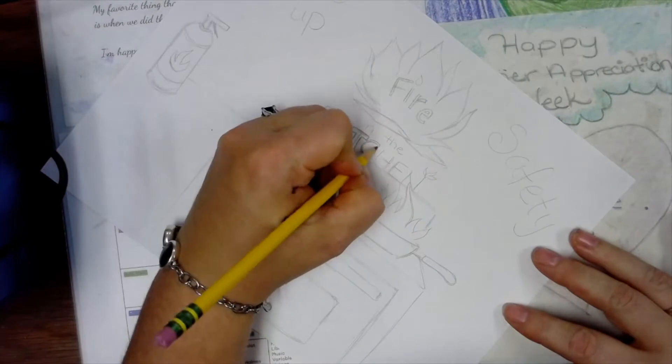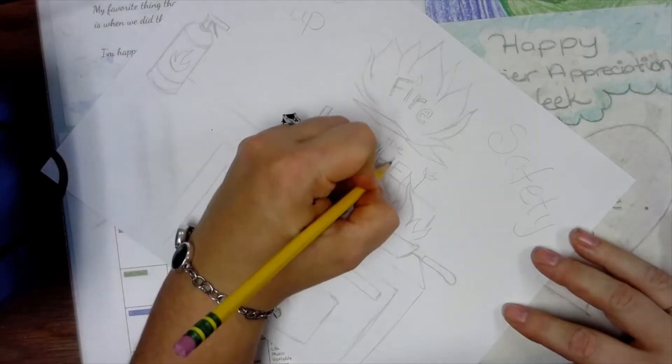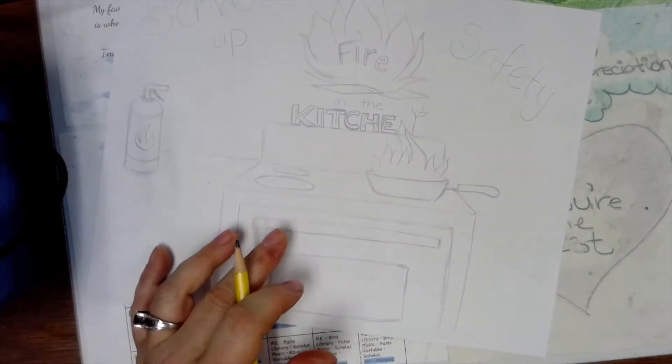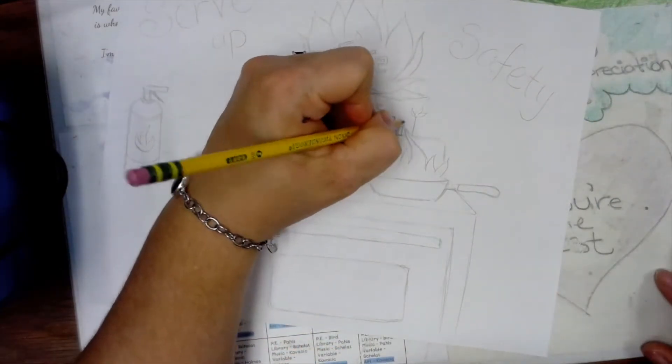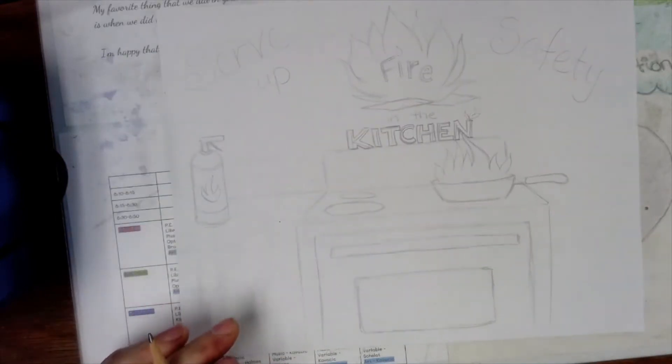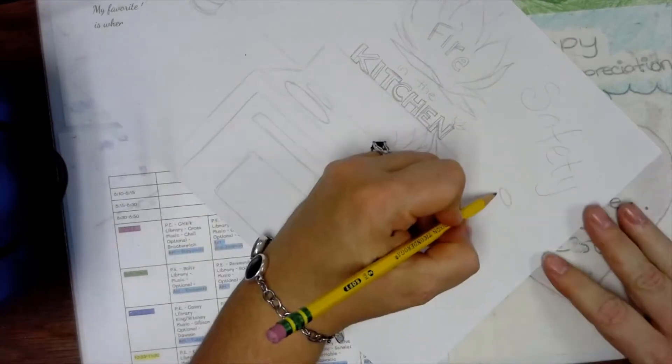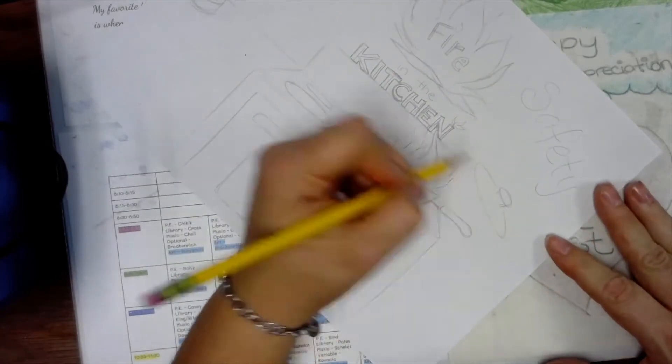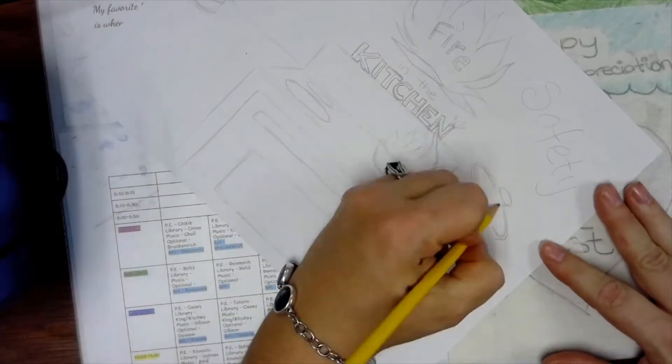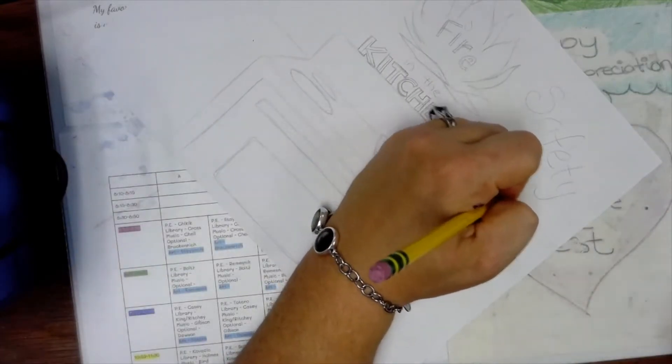You can see how I am tracing around the letters to make them more solid or block letters. Once I trace around them, I'll actually be able to color the inside. And over here I'm going to draw a lid for the pan because that is one way that you can put out a grease fire.